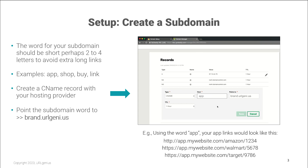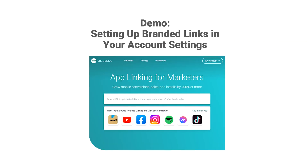Once you've selected the word for your subdomain, it's then time to go into your settings for URL Genius and fill out the form related to branding your URLs. Now I'm going to give you a quick demo of where to find that setting in your account setup.